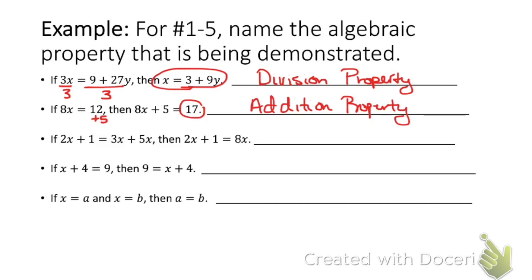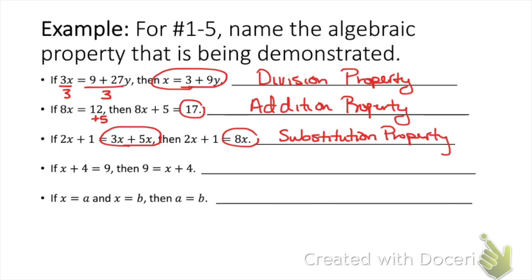The next one says if 2x plus 1 equals 3x plus 5x, then 2x plus 1 equals 8x. To go from the first equation to the second, all we did was combine like terms on the right-hand side: 3x plus 5x equals 8x. Since it was all on the same side, that's just substitution — this is not the addition property since it wasn't done to both sides. The next one: if x plus 4 equals 9, then 9 equals x plus 4. The two sides are just swapped interchangeably, so this is the symmetric property.